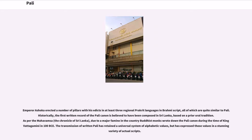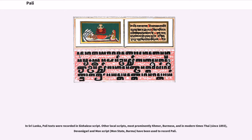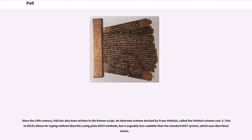Emperor Ashoka erected a number of pillars with his edicts in at least three regional Prakrit languages and Brahmi script, all of which are quite similar to Pali. Historically, the first written record of the Pali canon is believed to have been composed in Sri Lanka, based on a prior oral tradition. As per the Mahavamsa, due to a major famine, Buddhist monks wrote down the Pali canon during the time of King Vattagamani around 100 BCE. The transmission of written Pali has retained a universal system of alphabetic values, but has expressed those values in a variety of actual scripts — Sinhalese, Khmer, Burmese, Thai, Devanagari, and Mon script. Since the 19th century, Pali has also been written in the Roman script.